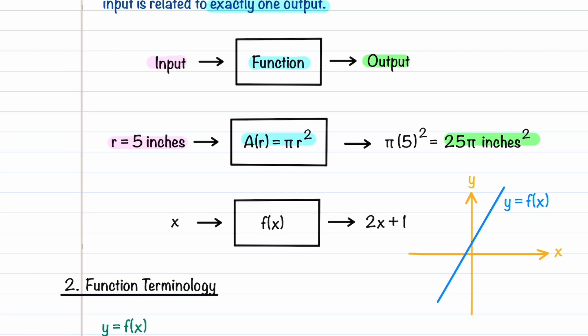In math, functions are often written as f of x. x is the input and 2x plus 1, for example, could be the output. This is the graph of 2x plus 1 and it's just a straight line.